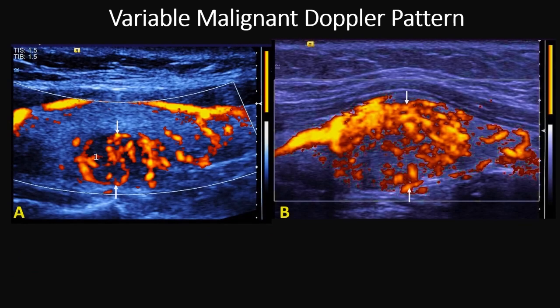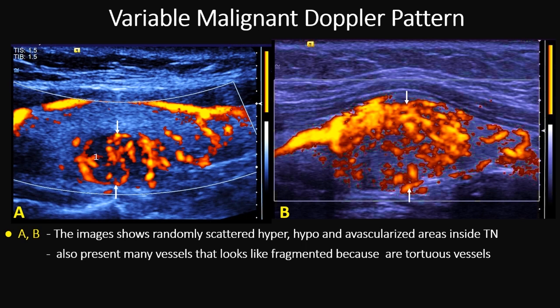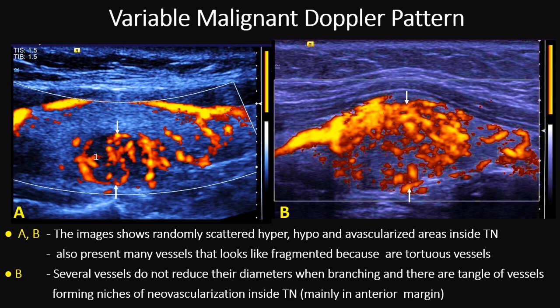In this variable malignant Doppler pattern, we have a variable amount of vessels inside. These vessels are anomalous — they are tortuous, or fragmented because they are tortuous. Also, close to the anterior portion of the nodule, there are entangled vessels that represent niches of neovascularization inside the thyroid nodule.